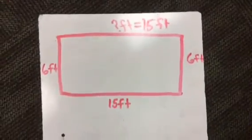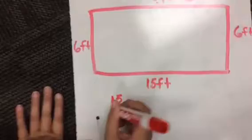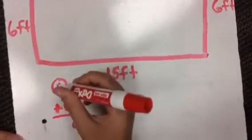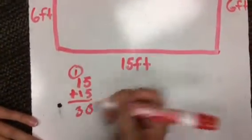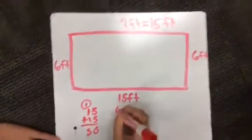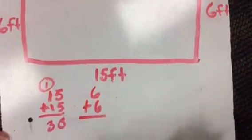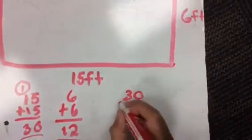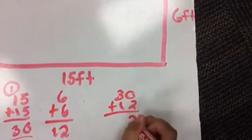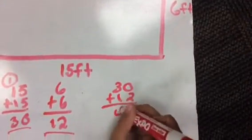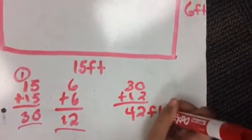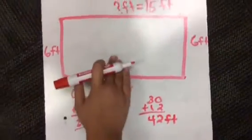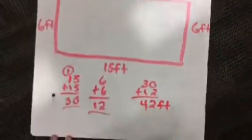So now let's do perimeter. So we add 15 and 15. And we all know that 5 plus 5 is 10. 1 plus 1 plus 1 equals 3. So that is 30. So now we have to do 6 plus 6. 6 plus 6 is 12. So now we are going to take 30 plus 12. We know 0 plus 2 is 2, and 3 plus 1 equals 4. So we know that is 42 feet. We don't put the cubes, we don't put the 2 or 3 because we are not multiplying. We are doing perimeter but not area.